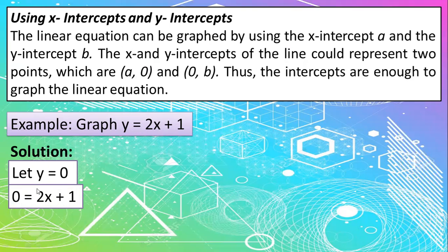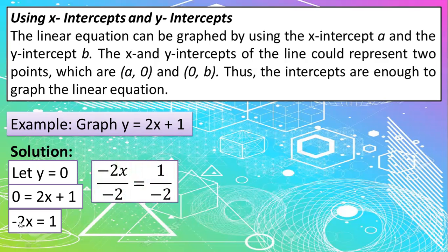So we simply need to transpose the 2x to the left side of the equation. So the sign will be changed from positive to negative. Or you can use the ATE method that I have mentioned last meeting. So of course, we need x to be alone because we're finding the value of x.